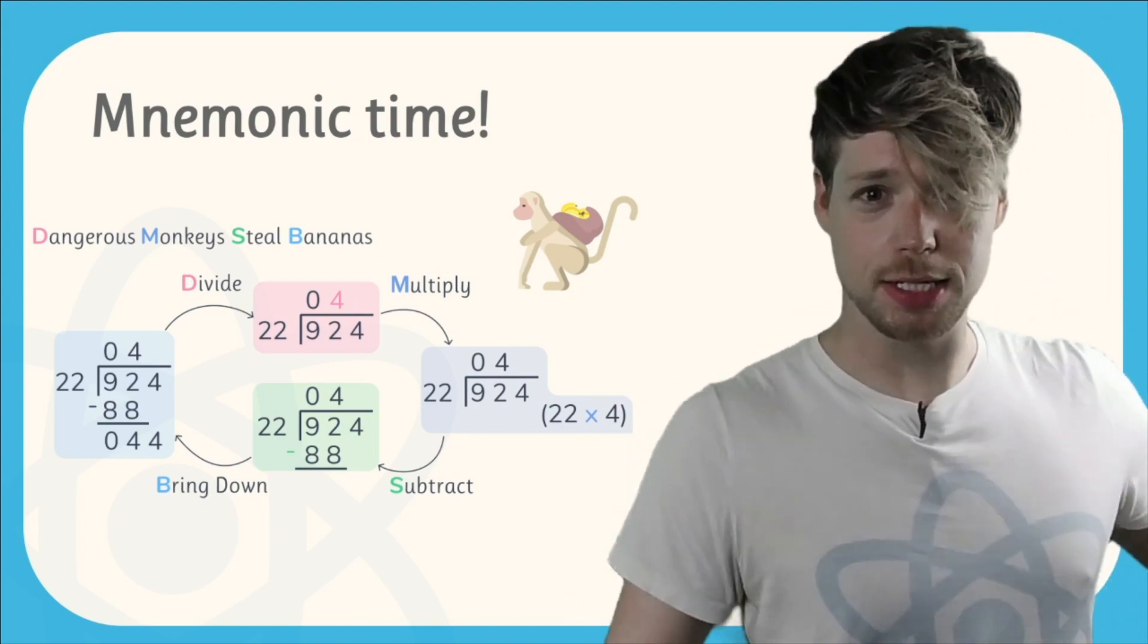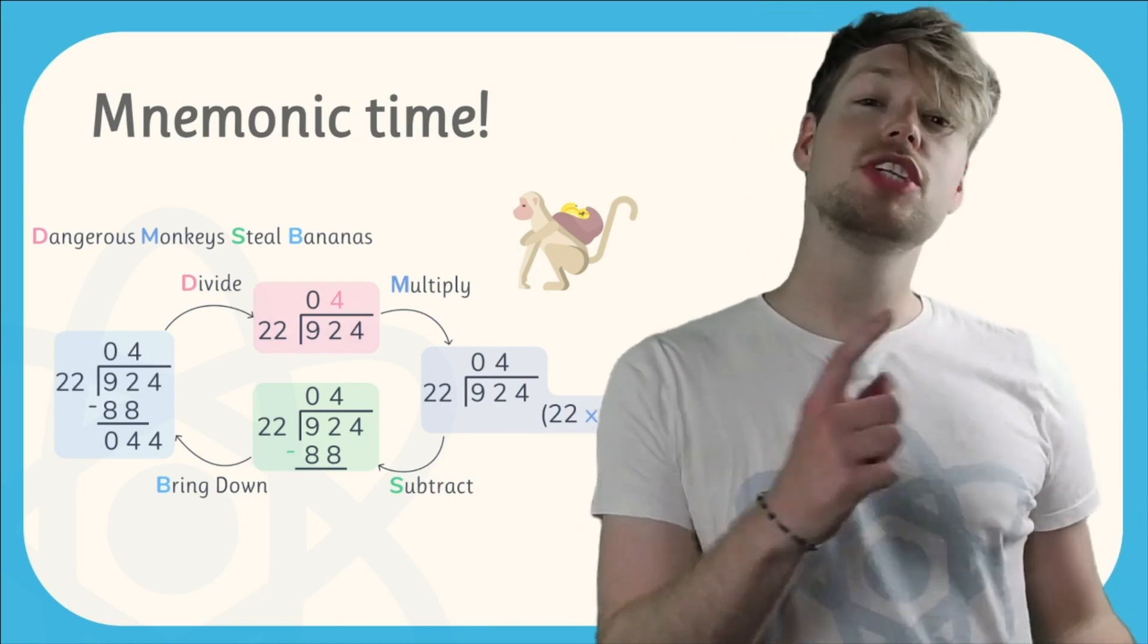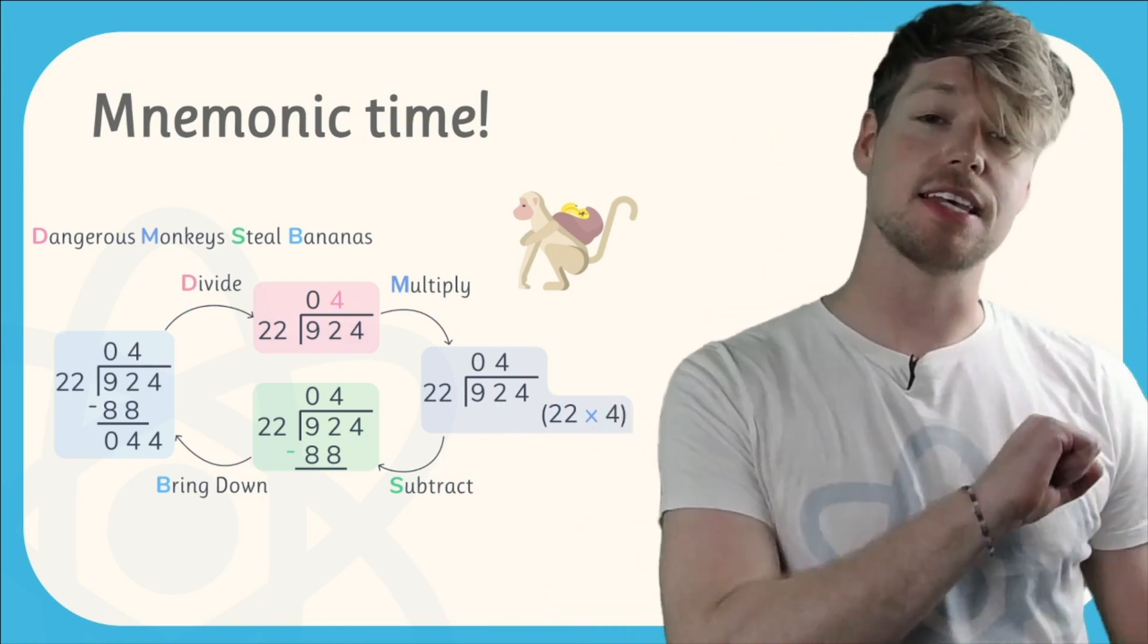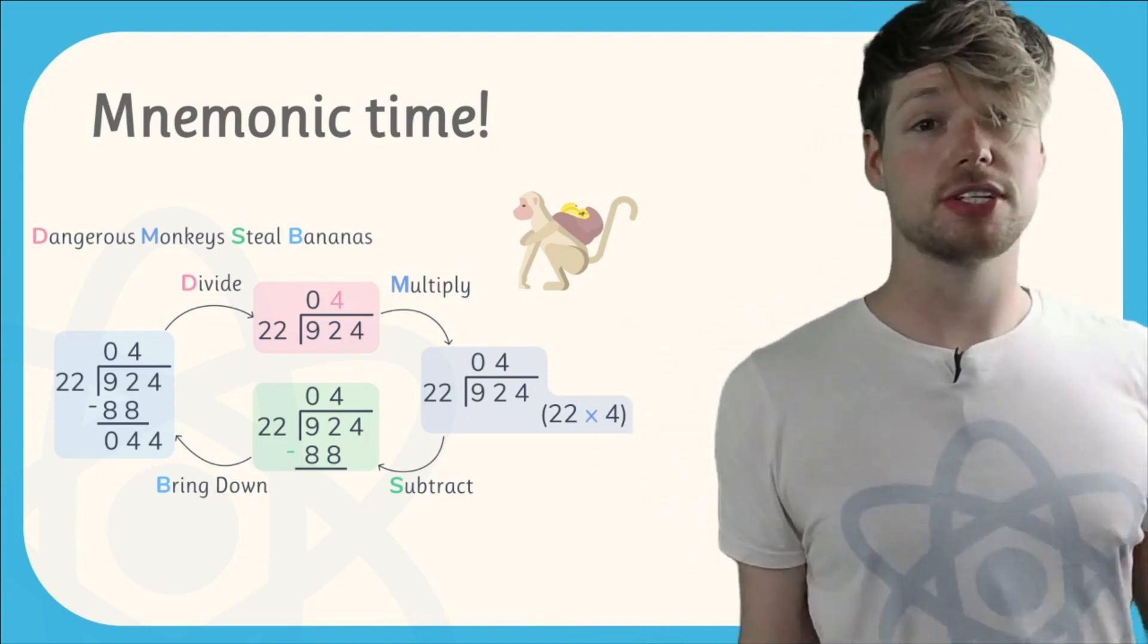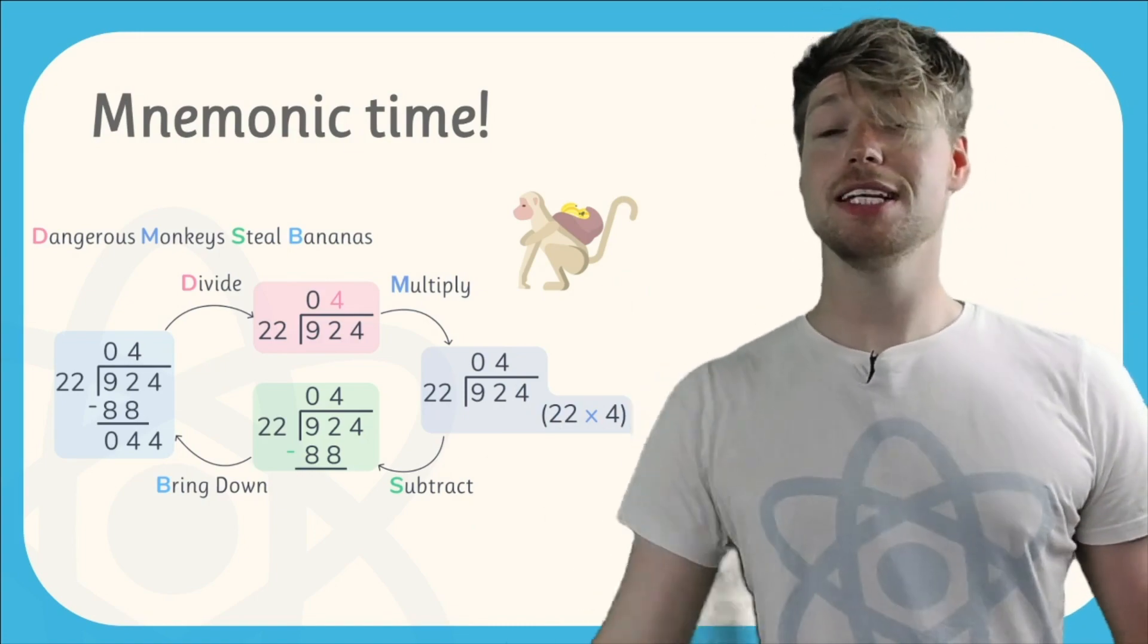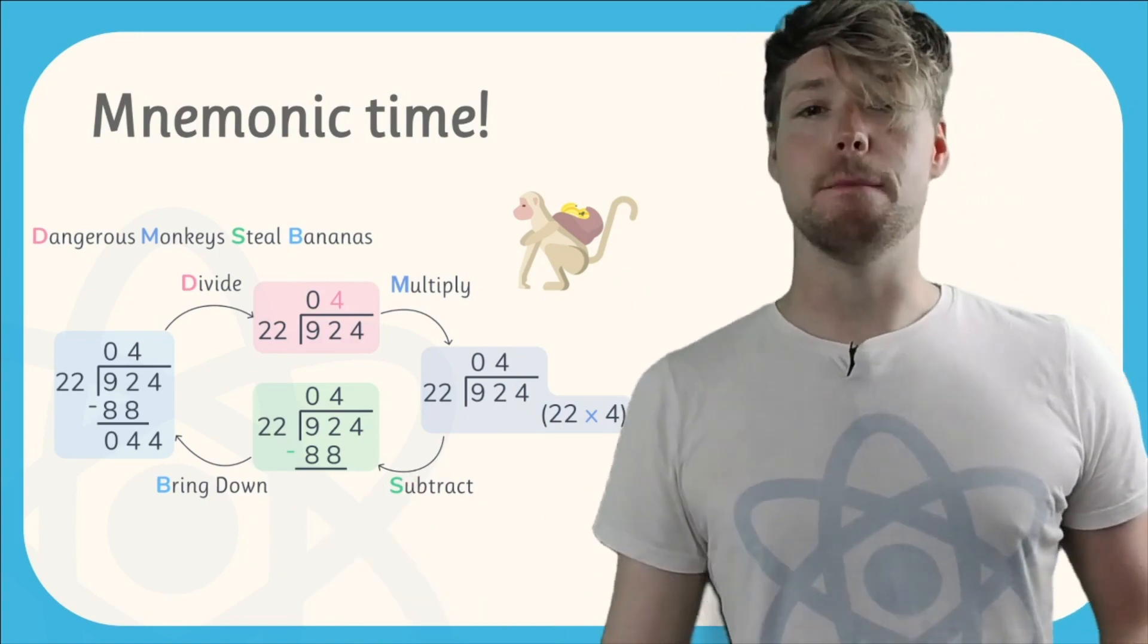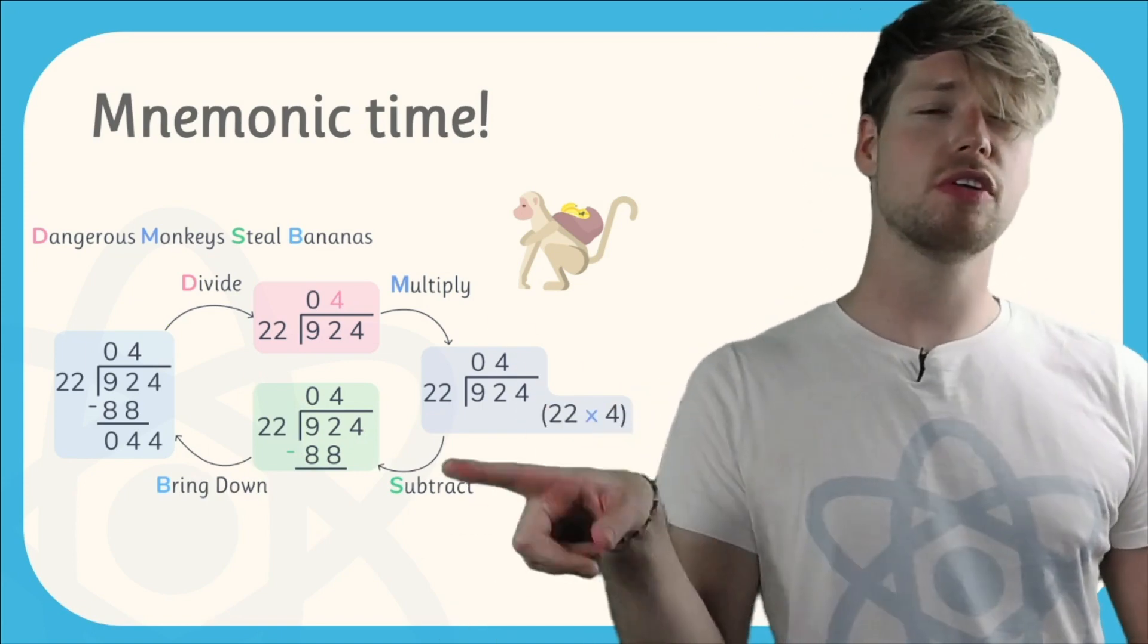So there is a handy mnemonic that we can use to remember the process that we follow in long division. The mnemonic is Dangerous Monkeys Steal Bananas. What does that mean? You just need to remember what the first letter in each of those words means. The D in Dangerous stands for Divide, the M in Monkey stands for Multiply, the S in Steel stands for Subtract, and the B in Bananas means Bring Down.